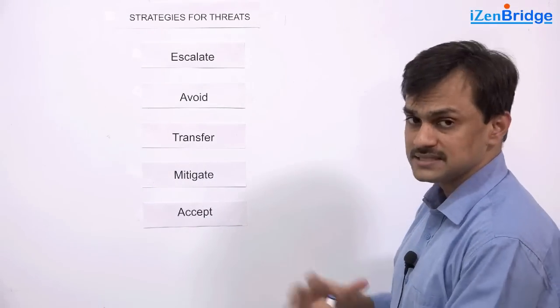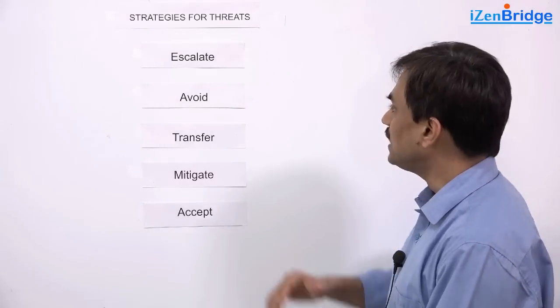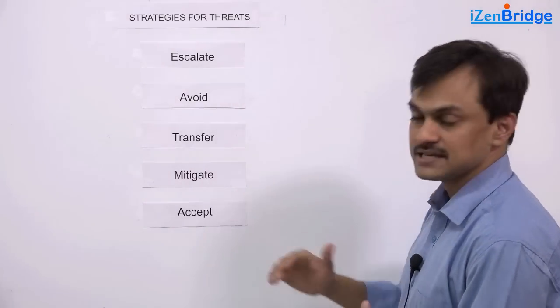In PMBOK Guide 6th edition, there are five possible strategies a project manager may look into and they are escalate, avoid, transfer, mitigate and accept.